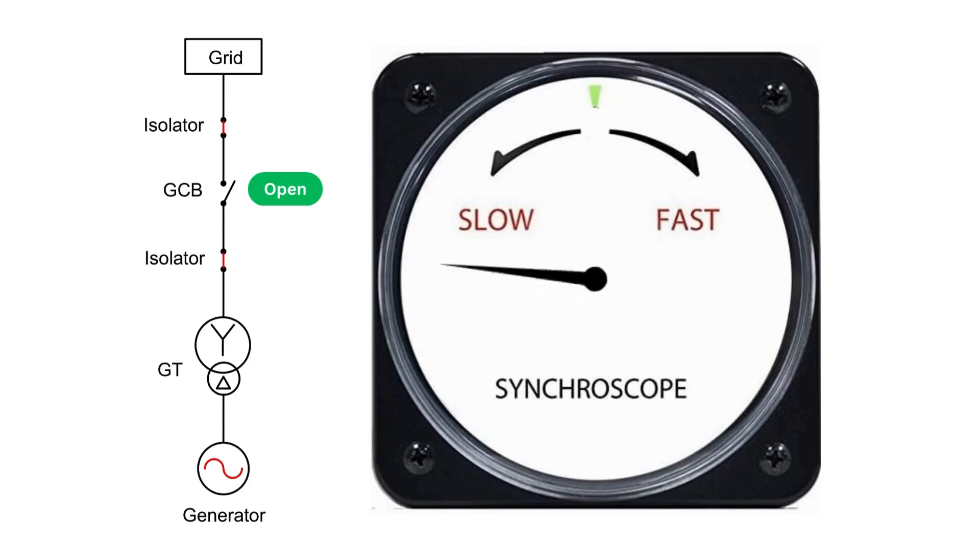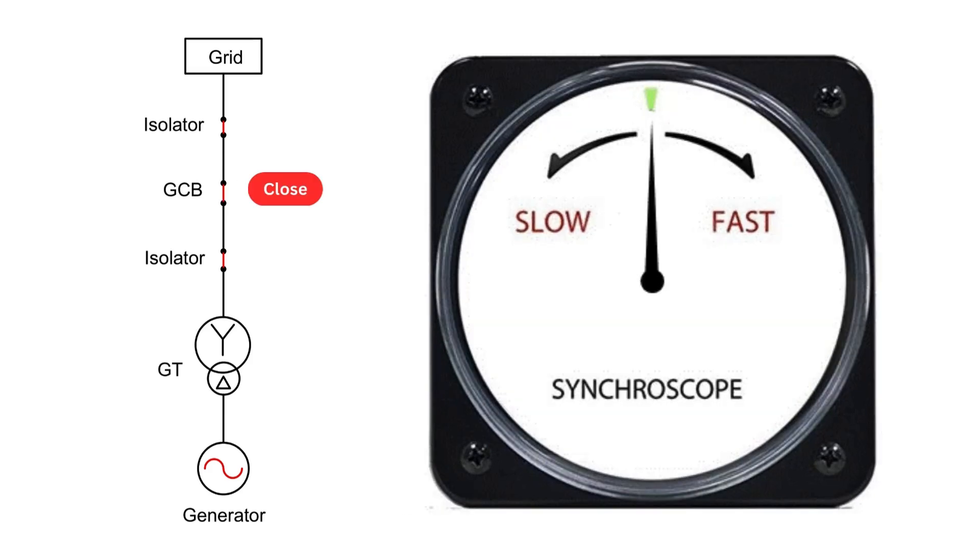In modern power plants, auto synchroscopes handle these adjustments automatically. Once parameters are matched and the synchroscope needle reaches 12 o'clock, it commands the GCB to close, connecting the generator with the grid.